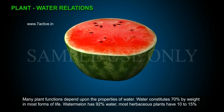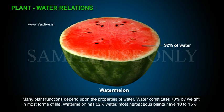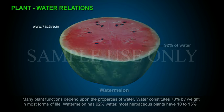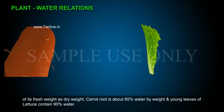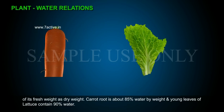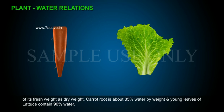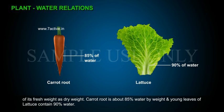Water constitutes 70% by weight in most forms of life. Watermelon has 92% of water. Most herbaceous plants have 10-15% of their fresh weight as dry weight. Carrot root is about 85% water by weight, and young leaves of lettuce contain 90% of water.